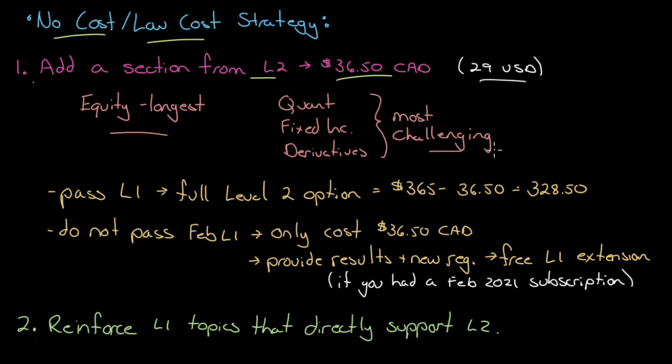Or you can start with a more challenging section. Quant, fixed income, derivatives at Level 2. These are quite challenging. Derivatives feeds back very well on Level 1, as does equity. If you get equity at Level 2 and you have to repeat Level 1, well, Level 1 equity will be fairly straightforward. Same with Level 1 derivatives. Fixed income kind of feeds back on Level 1 fixed income, but only in terms of understanding spot rates, par rates, and forward rates.